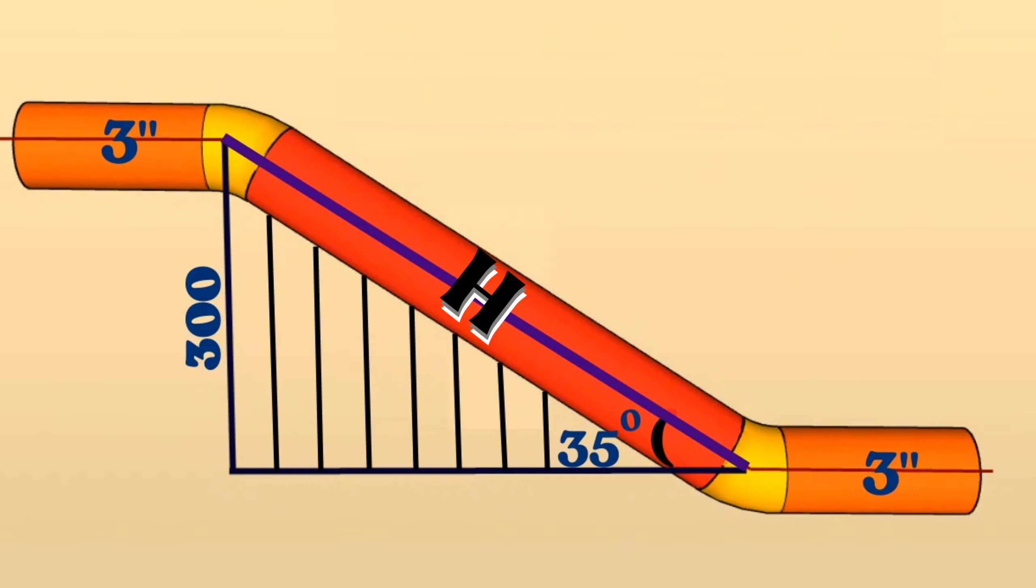The sine is a trigonometric function of an angle. The sine is the ratio of the length of the side that is opposite that angle to the hypotenuse of the triangle. In other words, sine 35 degrees is equal to the ratio of 300 millimeters to the hypotenuse H.